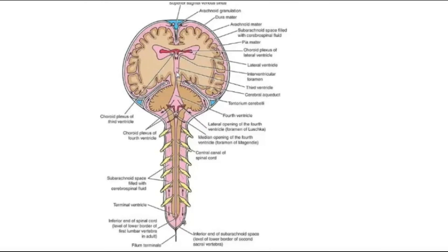The fluid is present in cavities within the brain called ventricles. Ventricles are basically the cavities present in our brain and spinal cord. The number of ventricles, their names, and details are a separate topic, but you should know that the brain and spinal cord have cavities called ventricles, and within these ventricles there is a fluid called cerebrospinal fluid.